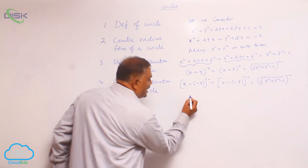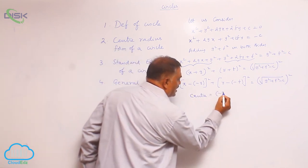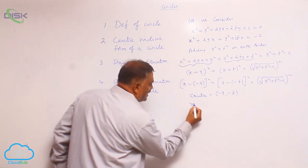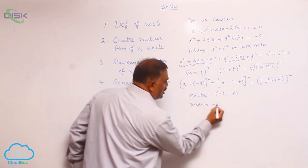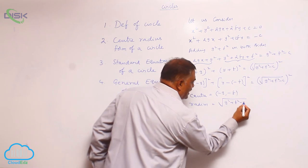That is why here center is given by minus g comma minus f and radius is given by root of g square plus f square minus c.